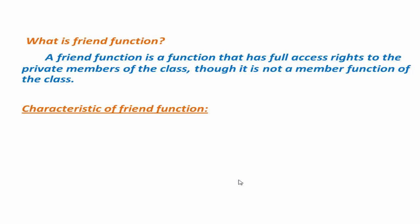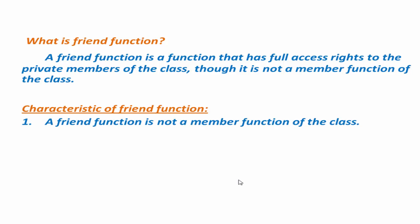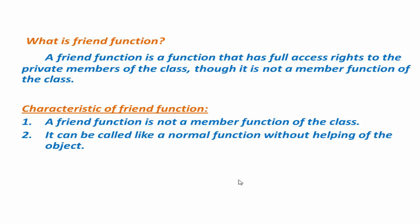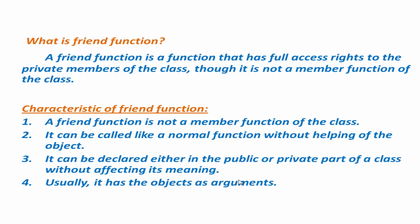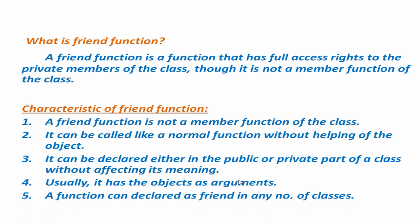Now we learn the characteristics of a friend function. A friend function is not a member function of the class. It can be called like a normal function without the help of an object. It can be declared either in the public or private part of a class without affecting its meaning. Usually it has the object as an argument. A function can be declared as friend in any number of classes.